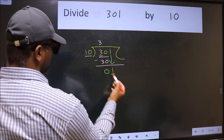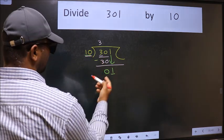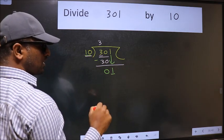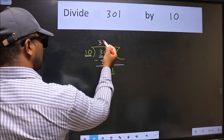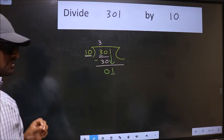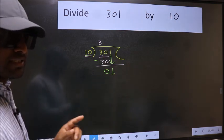Here we have 1 and here 10. 1 is smaller than 10. So what many do is they directly put the decimal point and take 0, which is wrong. Why is it wrong?